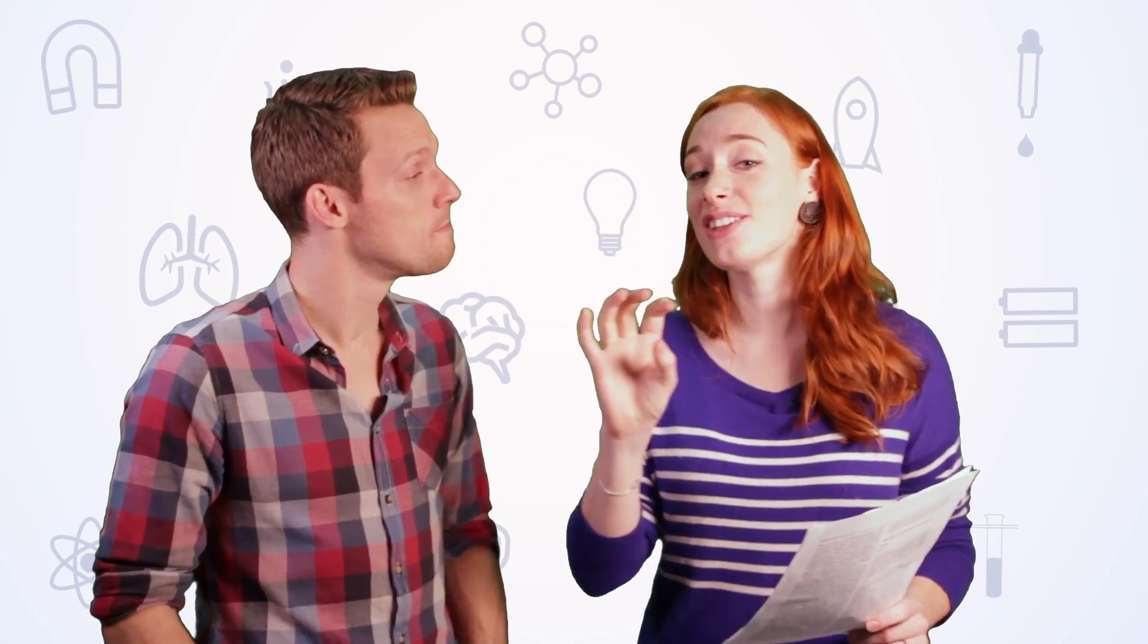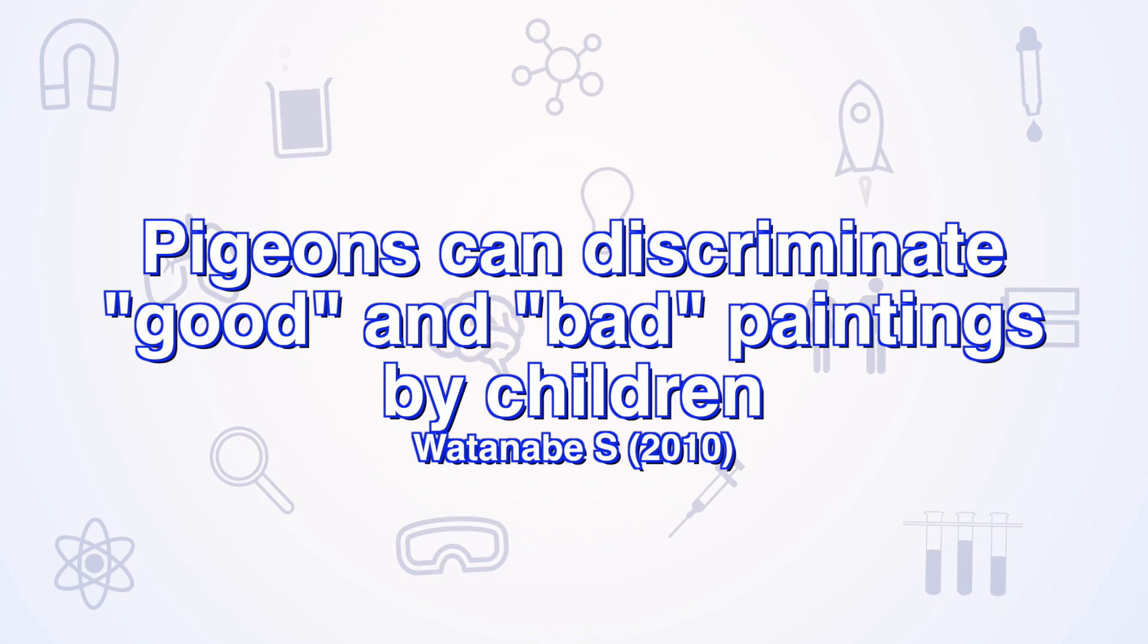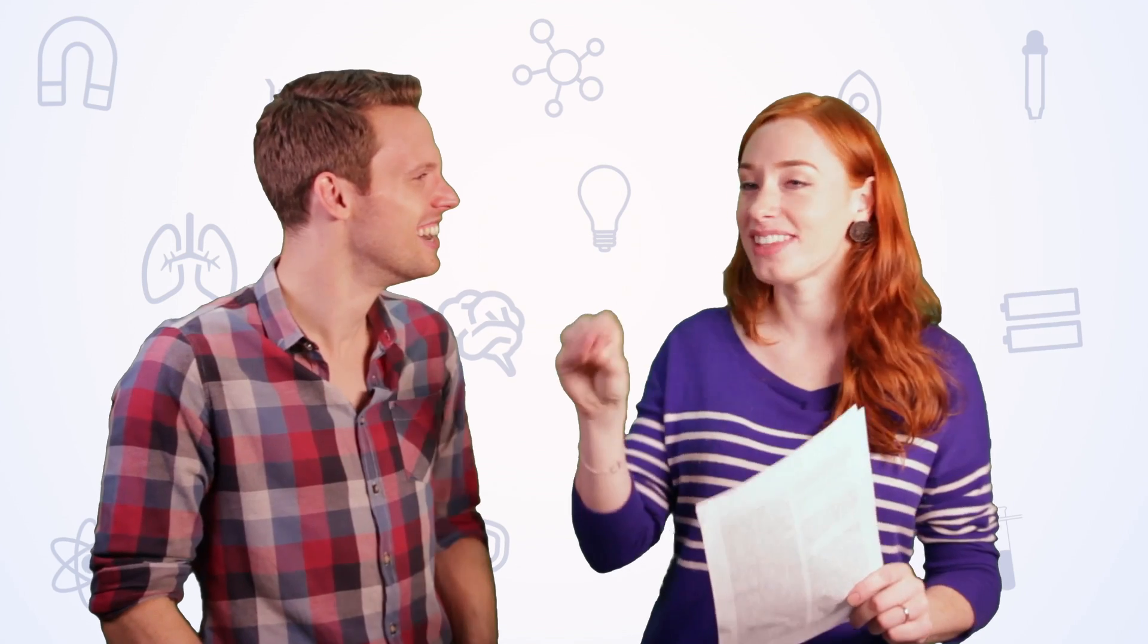So my paper, one of the best things I've ever read, its title is Pigeons Can Discriminate Good and Bad Paintings by Children. They peck when they see a good painting, a proper appreciation of art by pigeons. How does a pigeon know what's a good painting or a bad painting? So they train them. So they had a series of paintings by children, a teacher put them into good and bad piles. They train the pigeon on some of them and then would show them new pictures to see if the pigeons could tell whether they were good or bad.